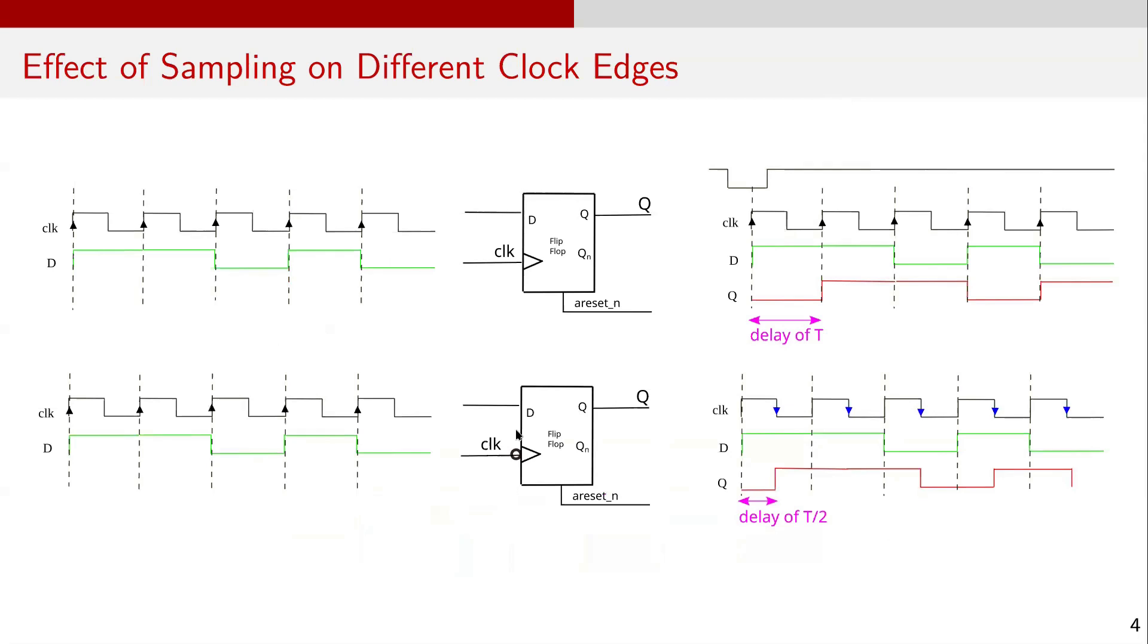The second concept is the effect of sampling on different clock edges. If the signal applied to the D input is synchronous with the rising clock edge and is also sampled at the rising edge, the output appears one full clock cycle delay later, that is with a delay of T. However, if the input is synchronous with the rising clock edge but is sampled at the falling edge, the output appears with a half cycle delay, that is T over 2.